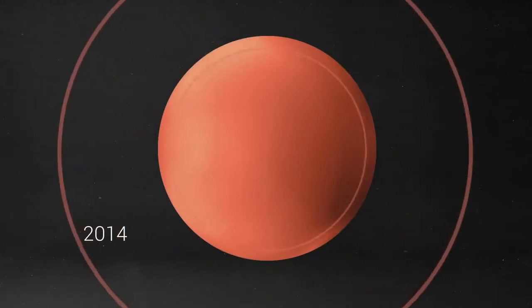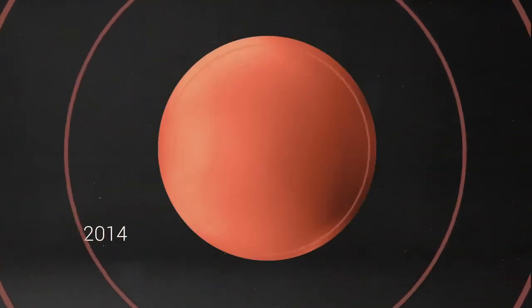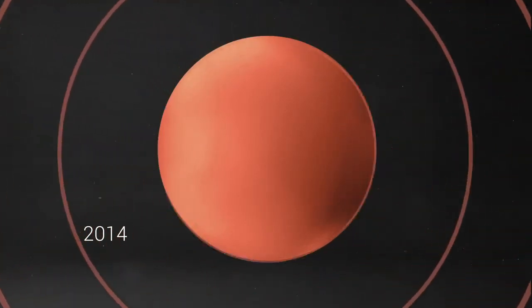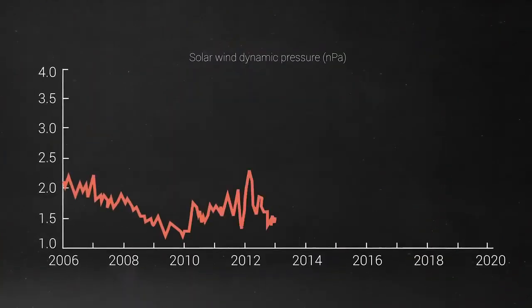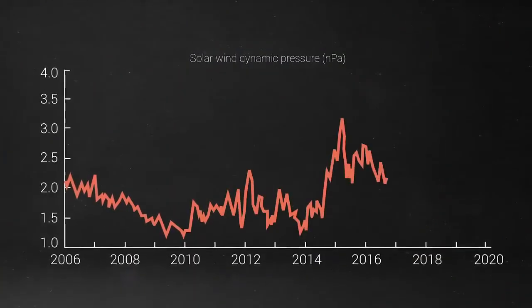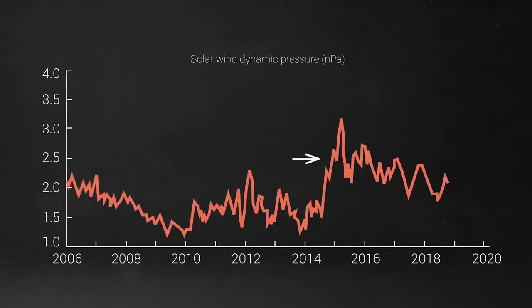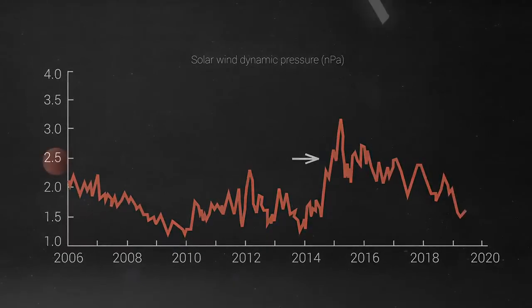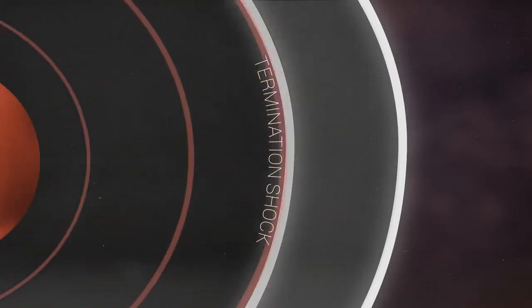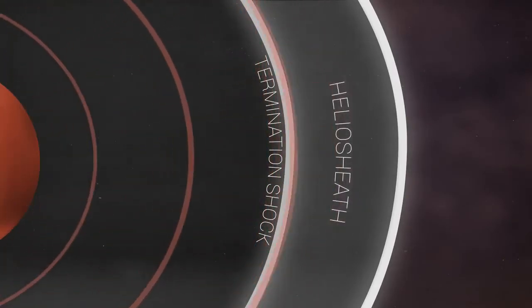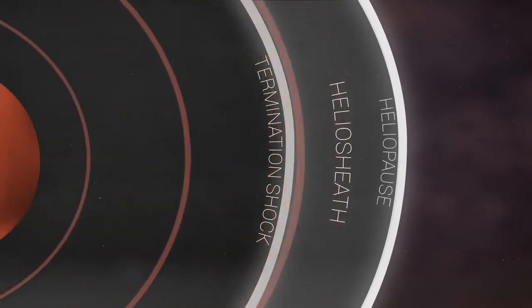For example, starting in 2014, there was a huge and prolonged increase in solar wind pressure. NASA spacecraft near Earth detected solar wind gusting 50% harder than previous years. After travelling outward for a year, solar wind hit the edge of the heliosphere. First the termination shock, and then it entered the heliosheath, that's encased by the heliopause.